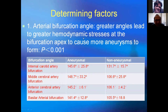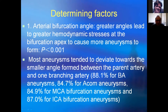What is the determining factor for aneurysm formation? Bifurcation angle is very important. Greater bifurcation angle leads to greater hemodynamic stresses at the bifurcation apex, causing more aneurysm formation. For aneurysm bifurcations — including the internal carotid artery, middle cerebral artery, anterior cerebral artery, and basilar artery bifurcations — the bifurcation angle is significantly greater in aneurysm cases (p < 0.001) versus non-aneurysm cases. Most aneurysms tend to deviate towards the smaller angle between the parent artery and one branch artery.